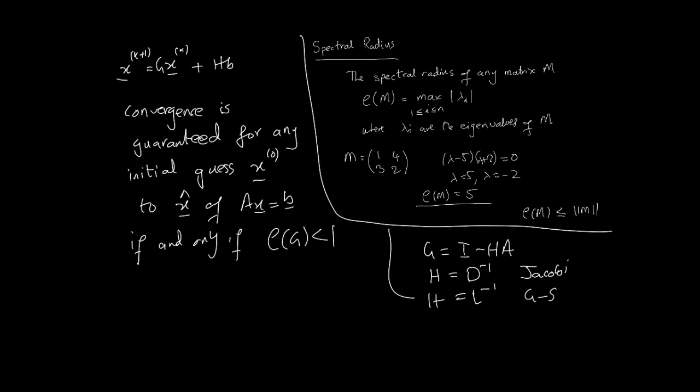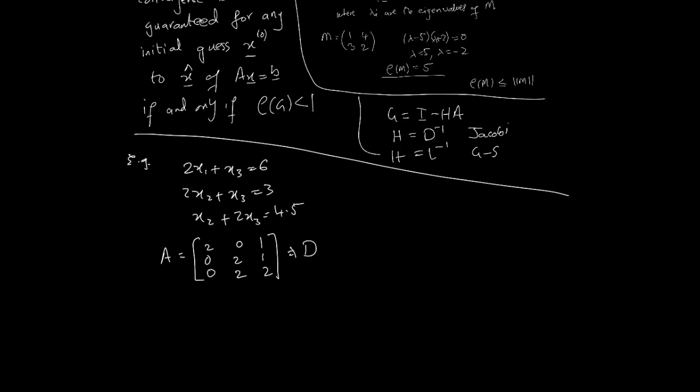That's a quick recap from the previous video. This means that for Jacobi, the spectral radius of G = I - D⁻¹A must be less than 1, and for Gauss-Seidel, the spectral radius of G = I - L⁻¹A must be less than 1. Here's an example of a system — we want to find the spectral radius of G and determine whether Jacobi will converge for this particular system. Matrix A is written out here.